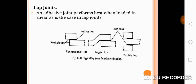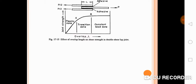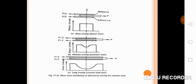Adhesives perform best when loaded in shear. Common joint configurations include the conventional lap joint, the joggle lap, and the double lap — the adhesive is applied between the parts as indicated. The effect of overlap length on shear strength in a double shear lap joint is important: with short, medium, and long overlap, there is variation in shear stress distribution.